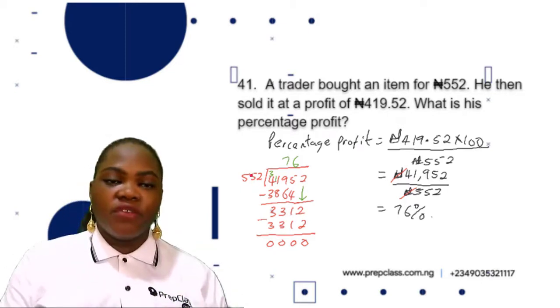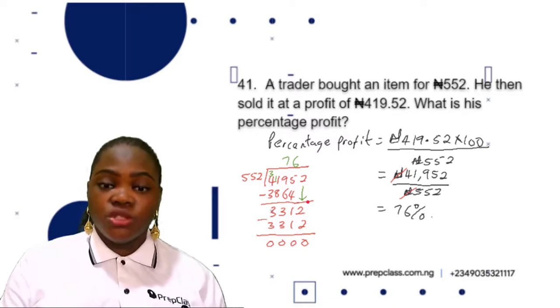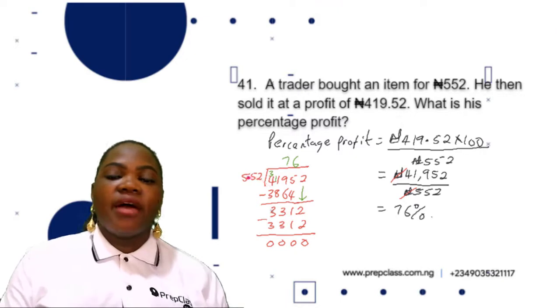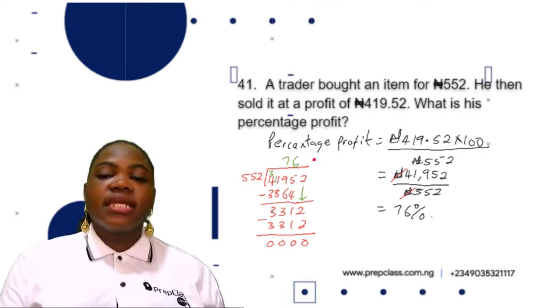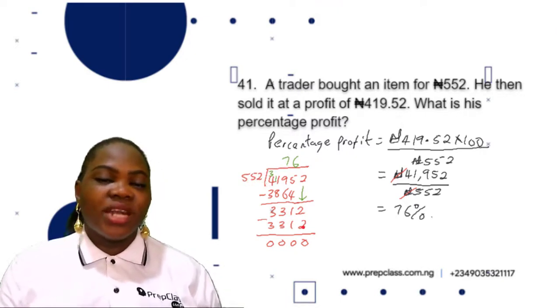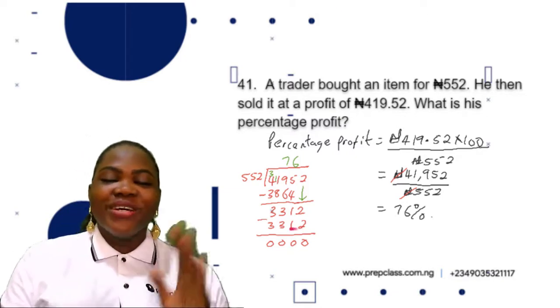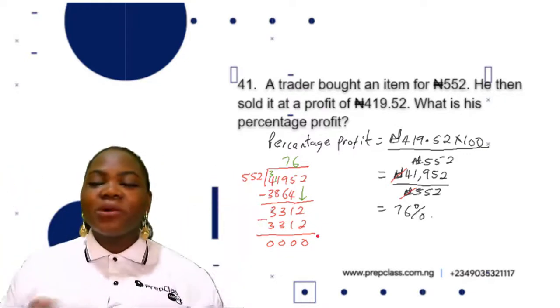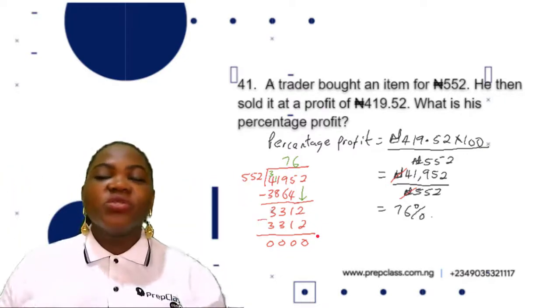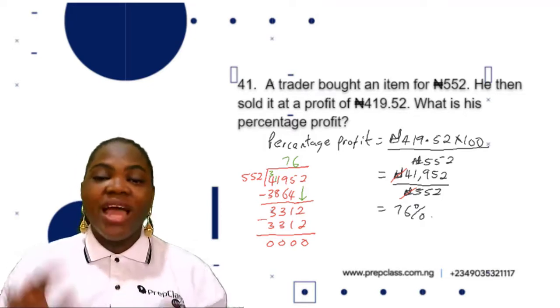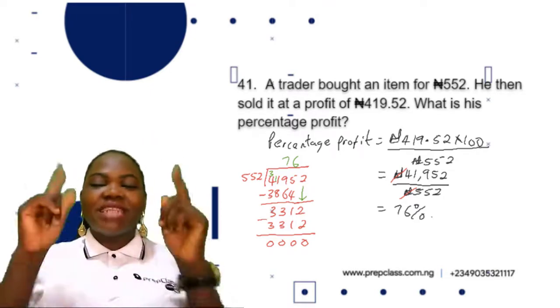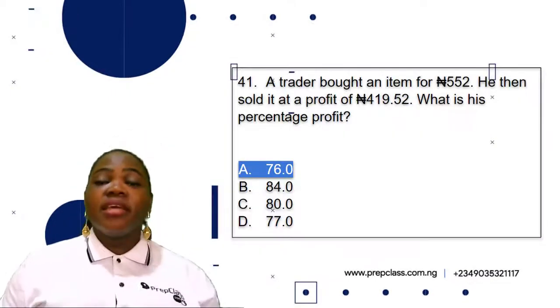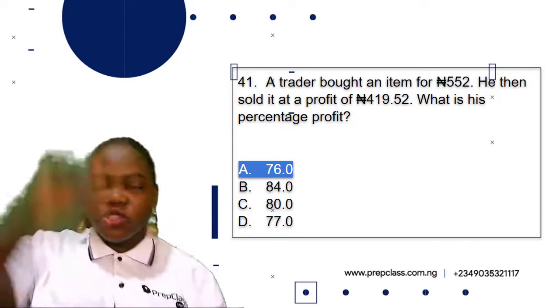Now we have 331. 331 is not divisible by 552, so we drop down the next digit which is 2, giving us 3312. 3312 divided by 552 is 6. 6 times 552 is 3312, so 3312 minus 3312 is zero. The answer is 76. So the percentage profit of this trader is 76%. The correct option is option A, 76.